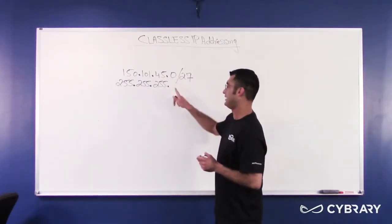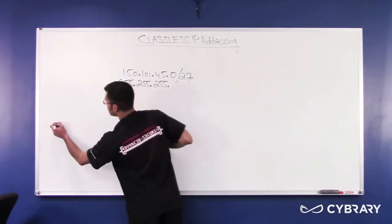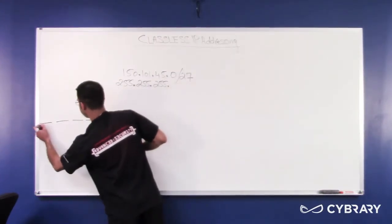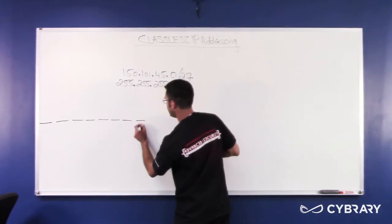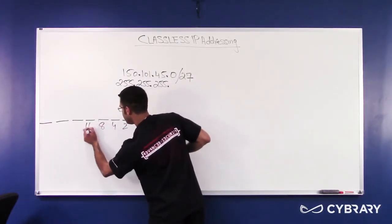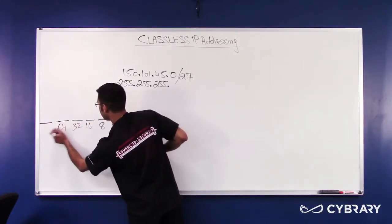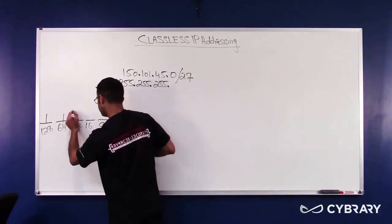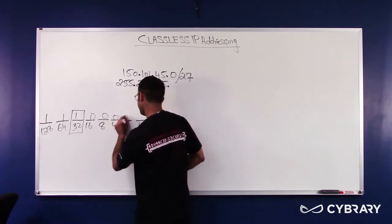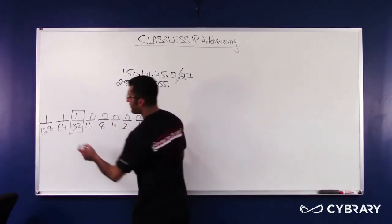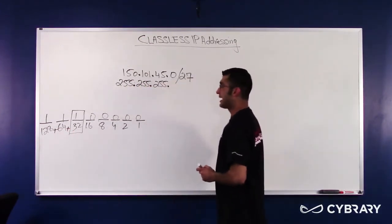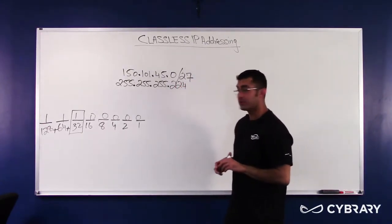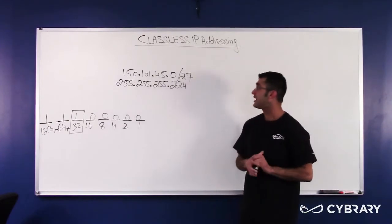Three extra bits are turned on in the last octet, or the fourth octet. Let's find out what that does. 1, 2, 3, 4, 5, 6, 7, 8. 1, 2, 4, 8, 16, 32, 64, 128. So three bits turned on here, and the rest are off. If I add up 128, 64, and 32, I get 224. So the mask in dotted decimal would end up being 255, 255, 255, 224.